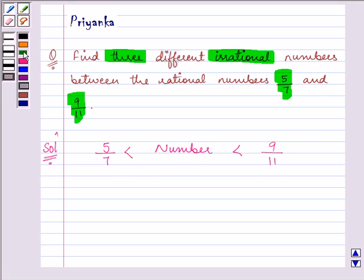First of all let us convert 5 by 7 into decimal form. And that comes out to be 0.71428571 and it goes on.